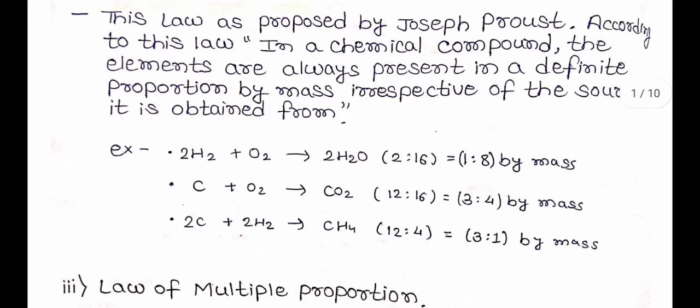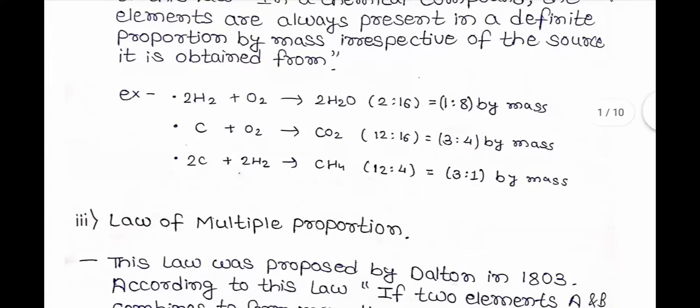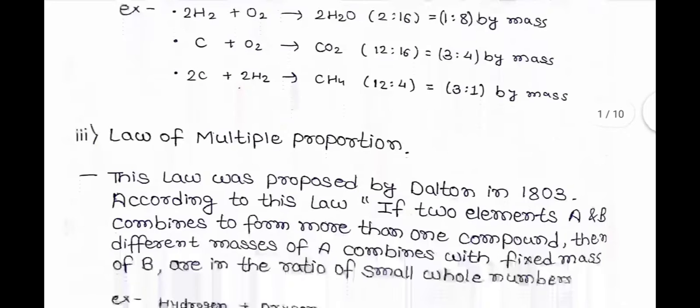...irrespective of their source. Example: 2H₂ + O₂ → 2H₂O, then the ratio of H and O is 1:8 by mass. Similarly, C + O₂ → CO₂, then the ratio of C and O is 3:4 by mass. Now, Law of Multiple Proportion — this law was proposed by Dalton in 1803.